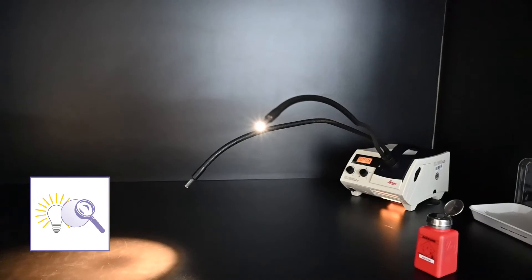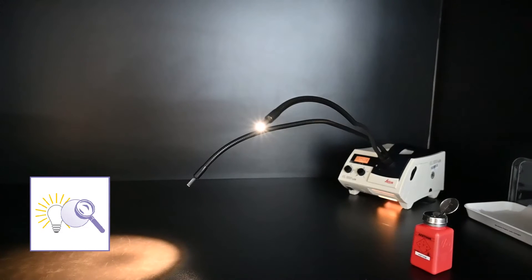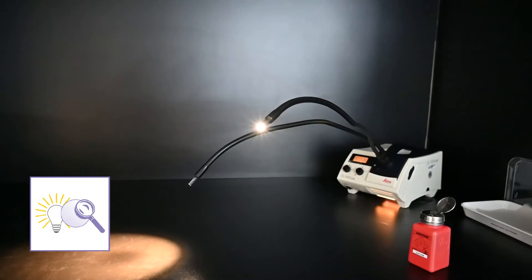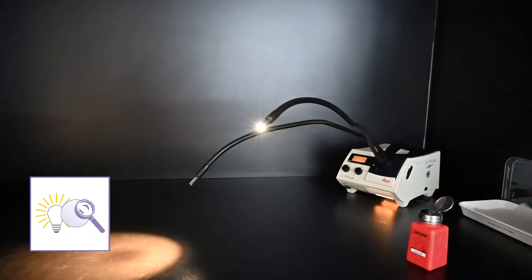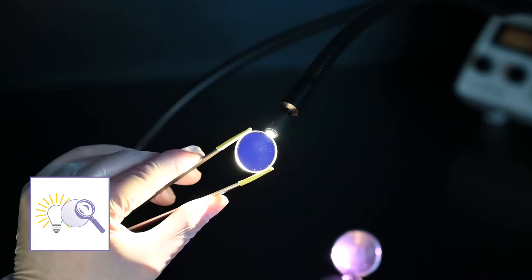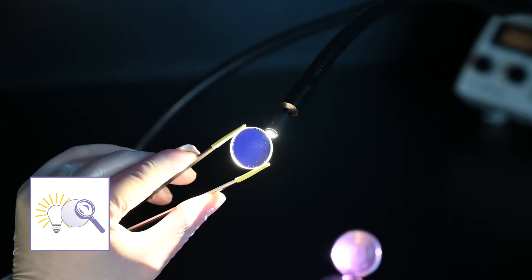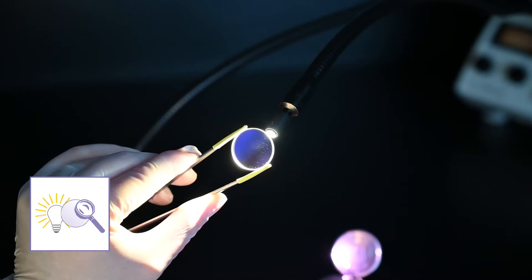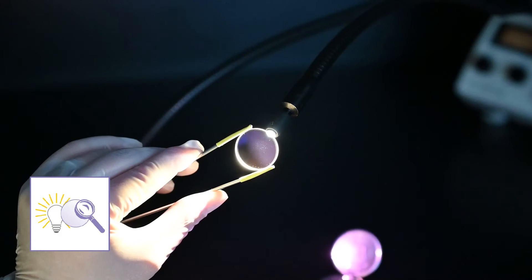A table lamp should be sufficient for cleaning purposes, preferably with an adjustable lamp head. Small imperfections are best detected in a darkened environment or under a certain observation angle.